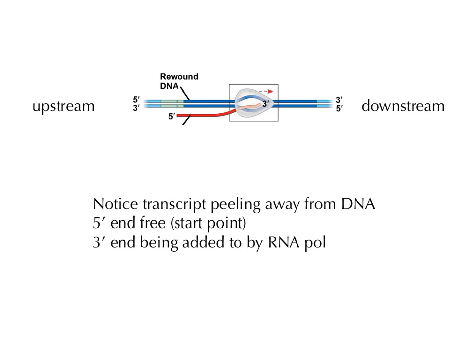Some terminology: the promoter defines the direction of gene expression. Anything the RNA polymerase moves towards is called downstream — towards the end of the gene. Towards the beginning of the gene is upstream. A regulatory region might be an upstream or downstream regulatory region. The five prime end is the free end, and the three prime is the end that's getting built on. Given a picture, you should be able to label all parts and identify five prime and three prime based on the positioning of molecules.